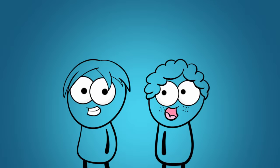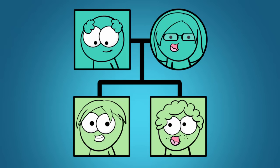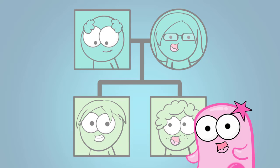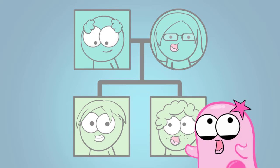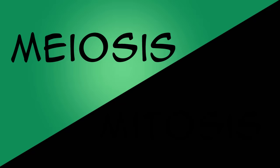Have you ever wondered how two siblings can have the same mom and dad and still look so different? Well today we're going to talk about a process that makes that possible — a process called meiosis.